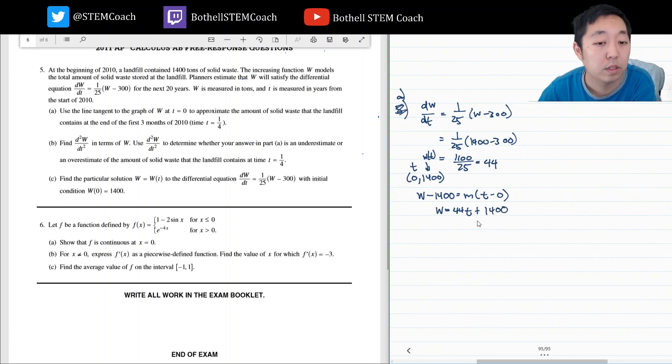And then for the first three months, which is a quarter of a year, so I want W of one-fourth is approximately equal to 44 times one-fourth, which is 11 plus 1,400. And that's 1,411.